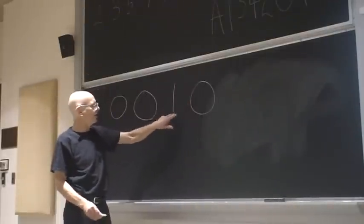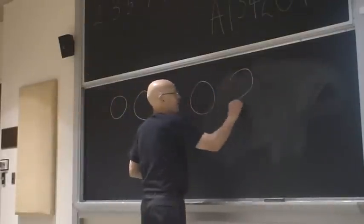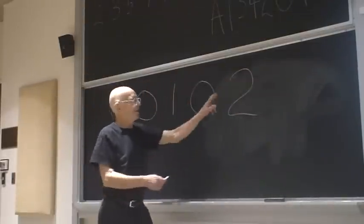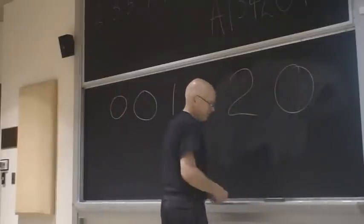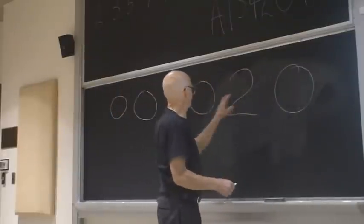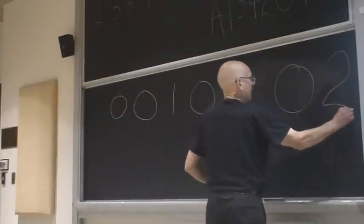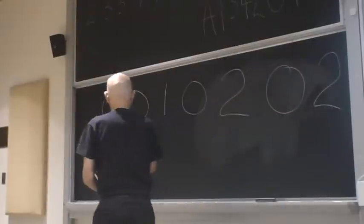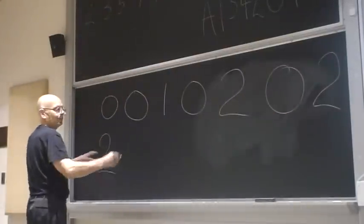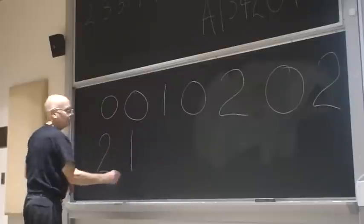Now, we have seen a 0 before, two steps back, so the next term is a 2. Now, we haven't seen a 2 before, so we get a 0. And we have seen a 0 before, so we get a 2. We've seen a 2 before, two steps back, so we get another 2. And we've seen a 2 before, one step back, so we get a 1.